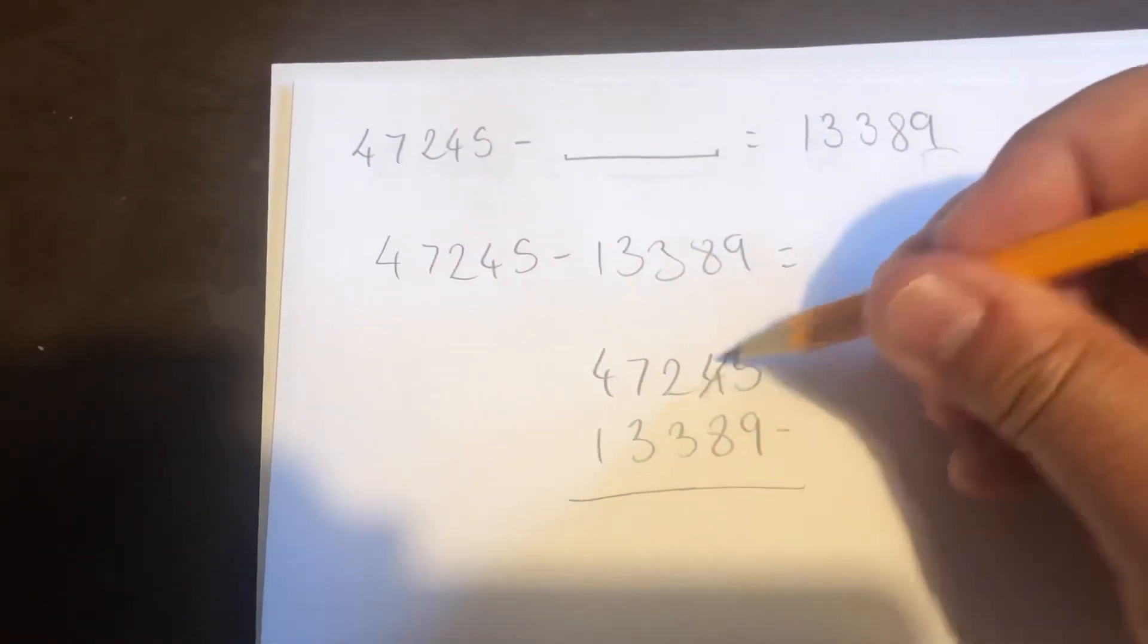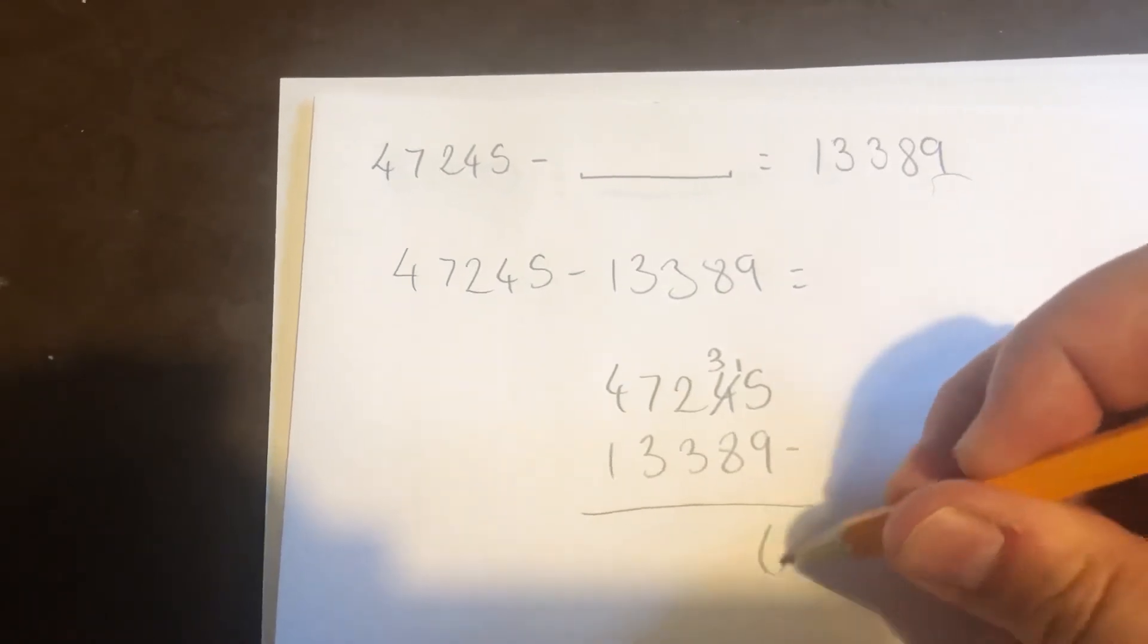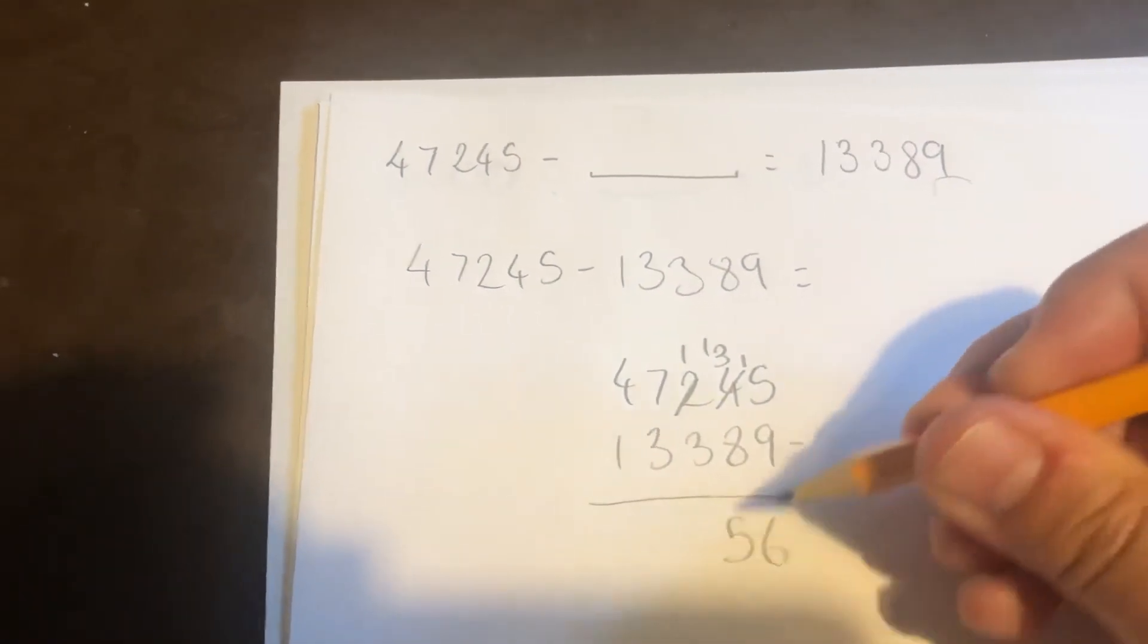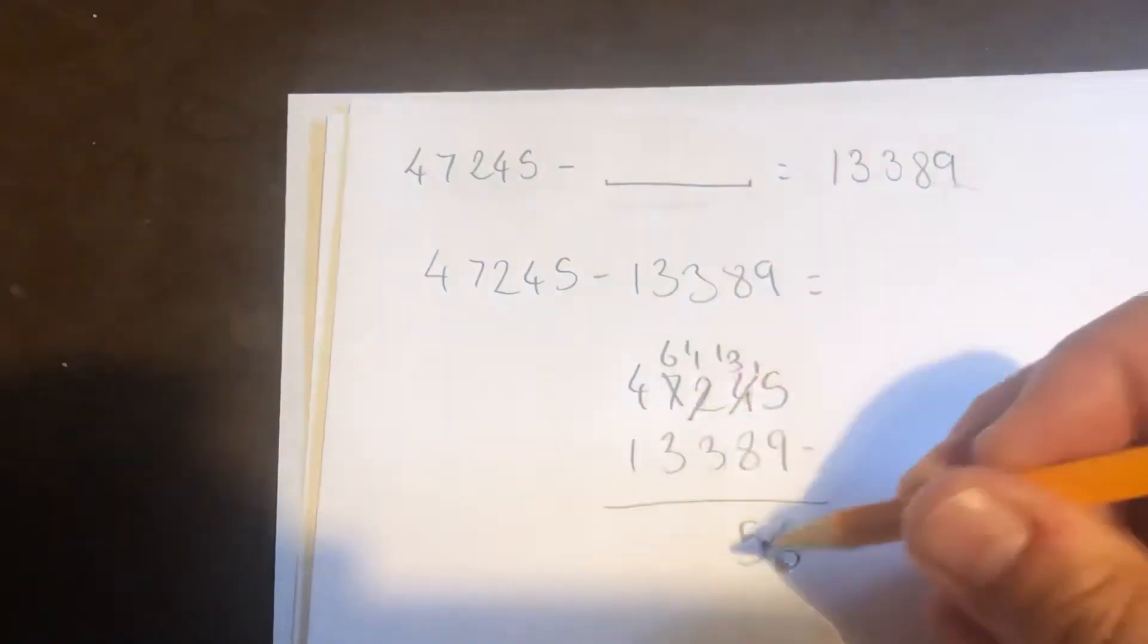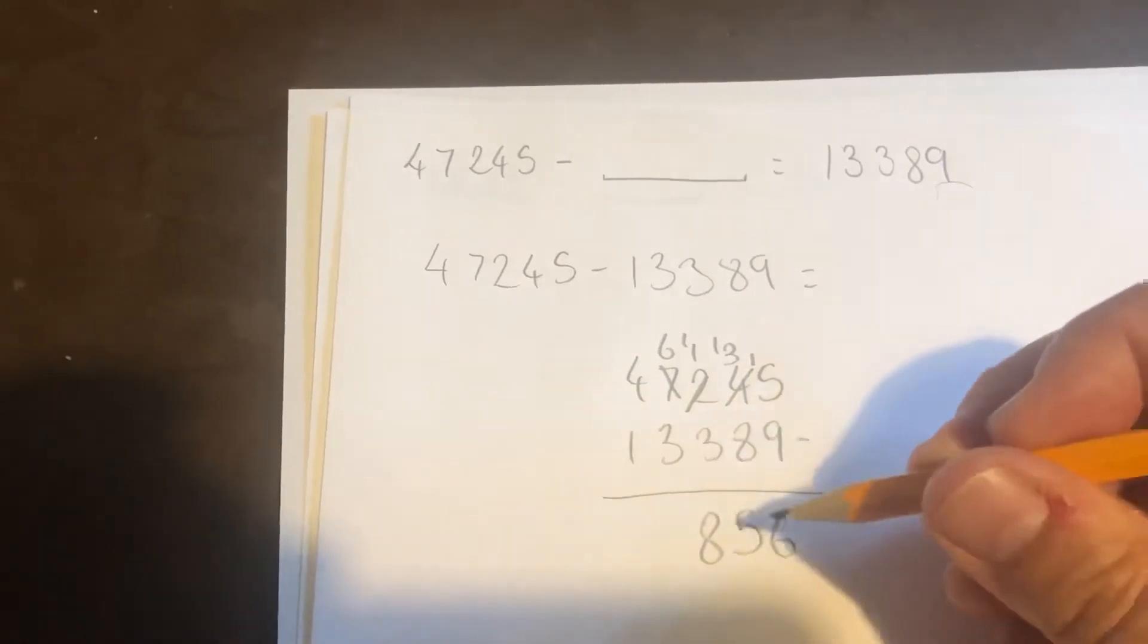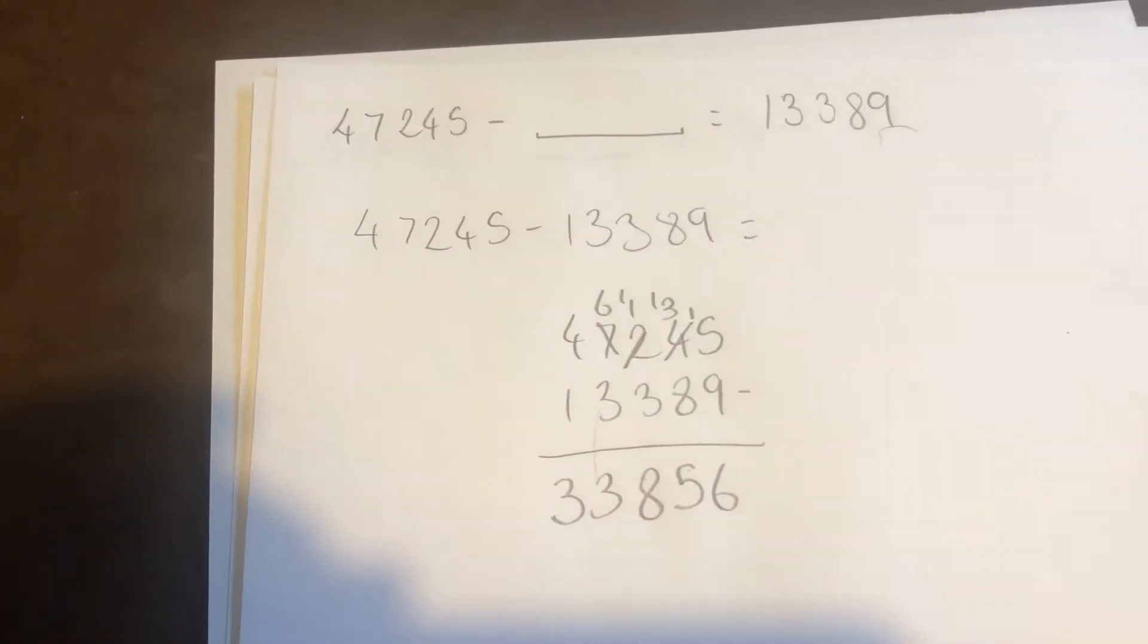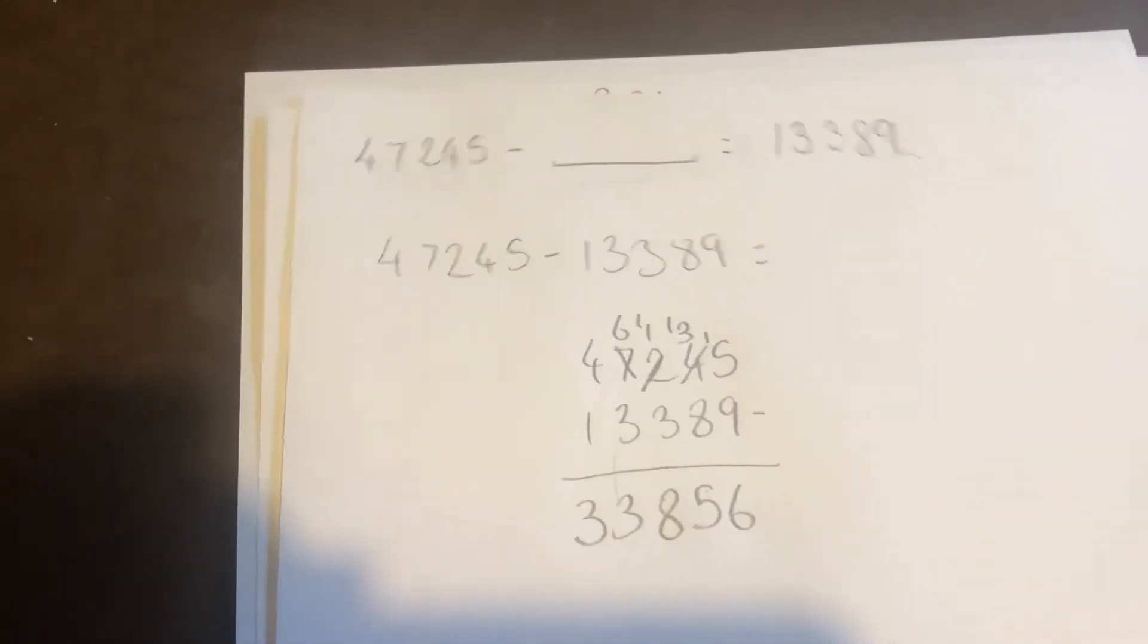5 take away 9, I can't do it, I'm going to borrow from this 4. 15 take away 9 is 6. 3 take away 8, I can't do it, I'm going to borrow from the 2. 13 take away 8 is 5. 1 take away 3, I can't do that one, so I'm going to borrow from the 7. 11 take away 3 is 8. 6 take away 3 is 3, and 4 take away 1 is 3. So that's my answer: 33,856. That's question number 1.